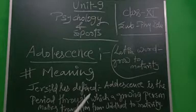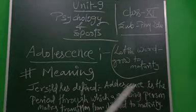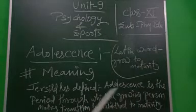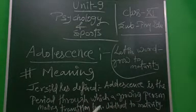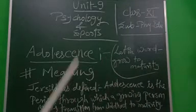Jashid has defined Adolescence as the period through which a growing person makes transition from childhood to maturity.